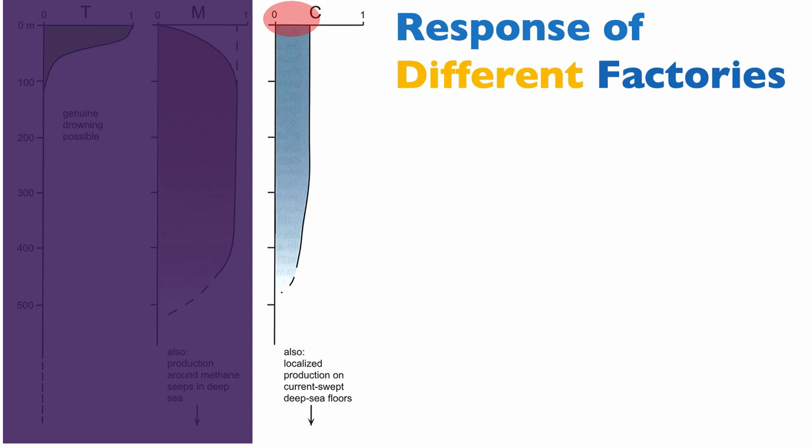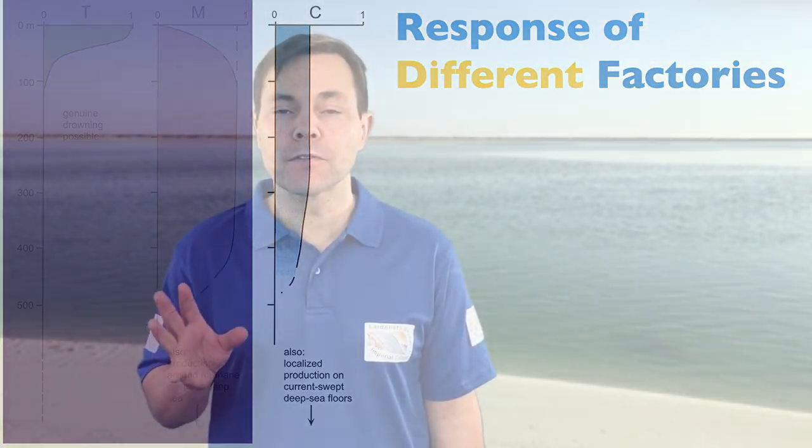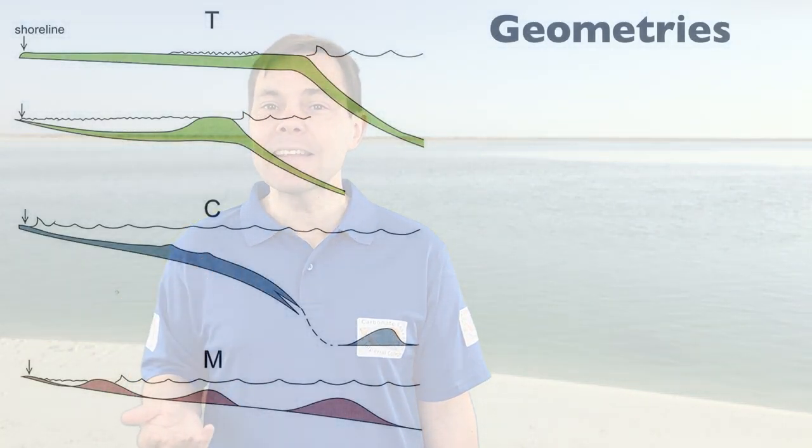Notice something very important: the production of the C-factory is never one, it's below one. This is to indicate that the volume of sediments coming from these factories is very low. Really, the most abundant production of carbonate comes from the T-factory and the M-factory, although the M-factory is less abundant in the modern world. The C-factory does not produce that much sediment.